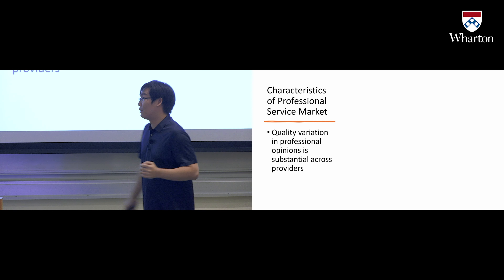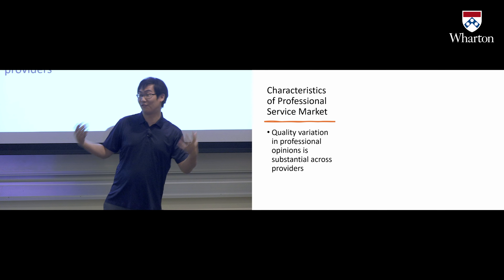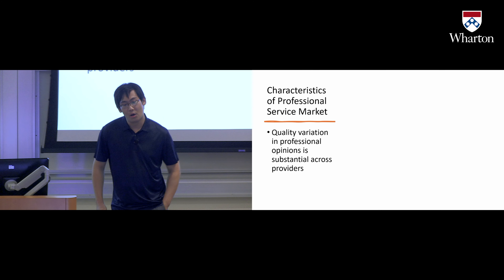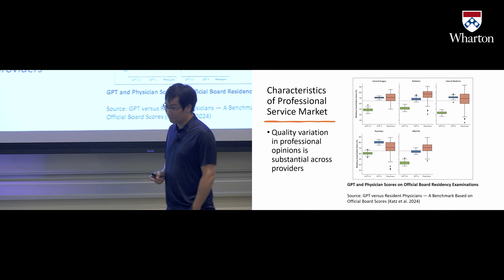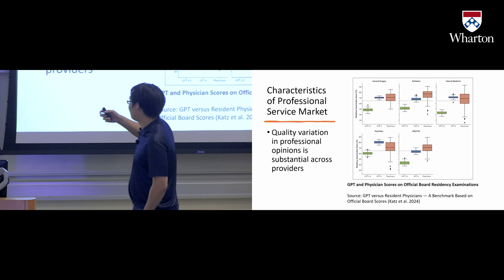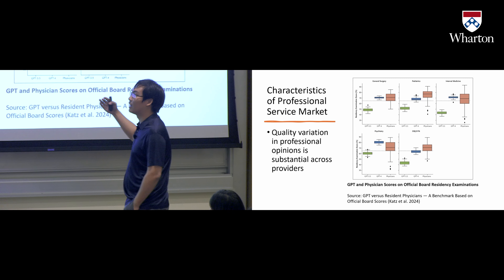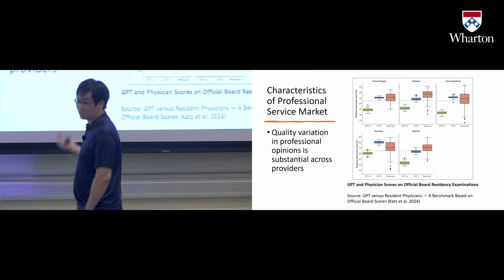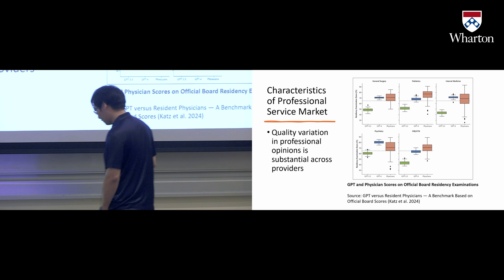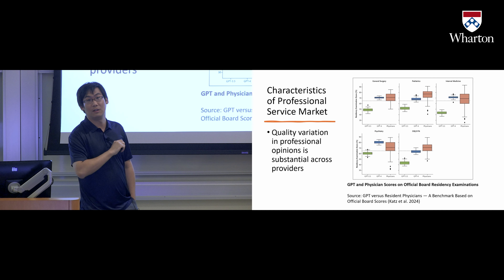Another important characteristic of the professional service market is the huge quality variation across different providers. For example, in medical service, if you look at the distribution of exam scores across different levels of medical service providers, some can have a really high score and some can have a really low score.